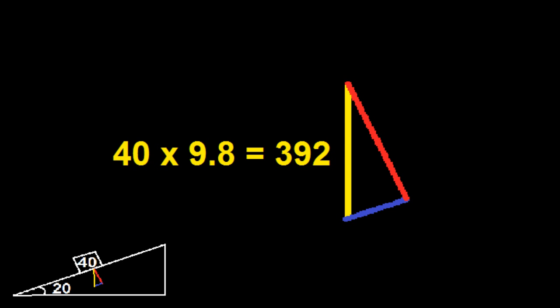As I said before, the hypotenuse is the mass times the gravity so it's 40 times 9.8 which is 392.